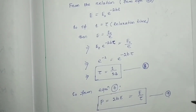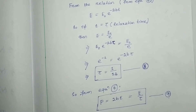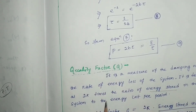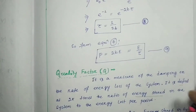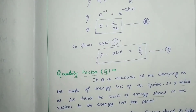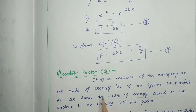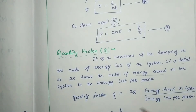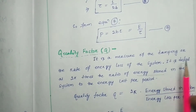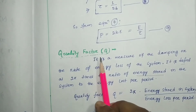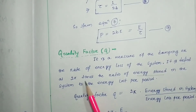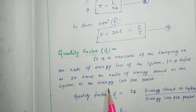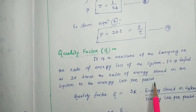Now we come to the quality factor. The quality factor is also a physical parameter which measures the damping or the rate of energy loss of the system. As per the definition, the quality factor Q is defined as 2π times the ratio of energy stored in the system to the energy lost per period.